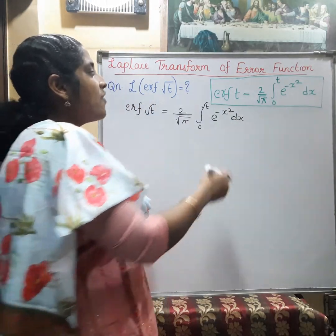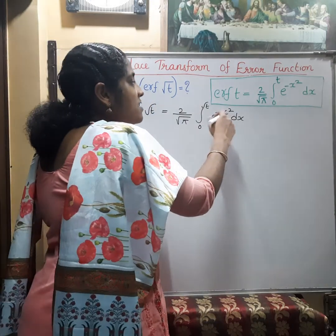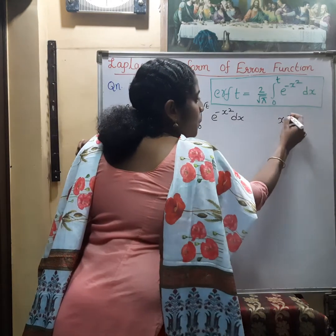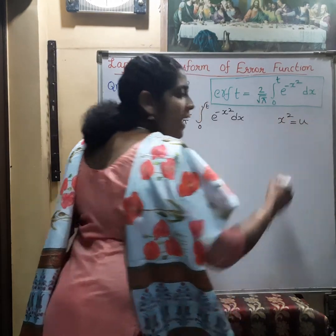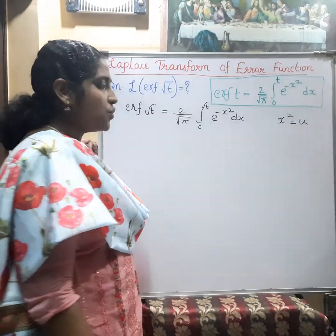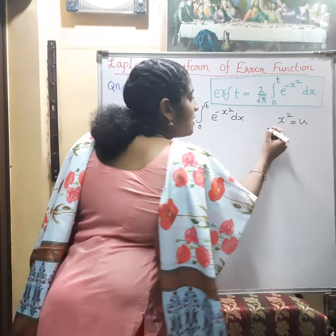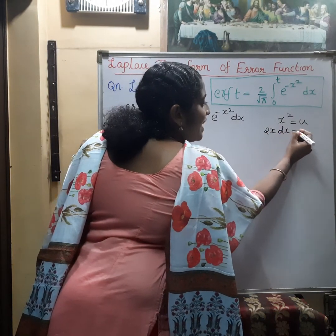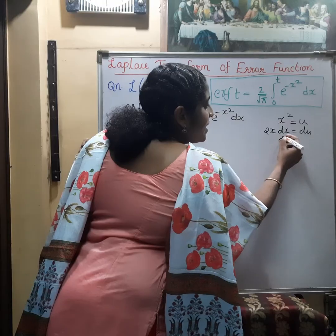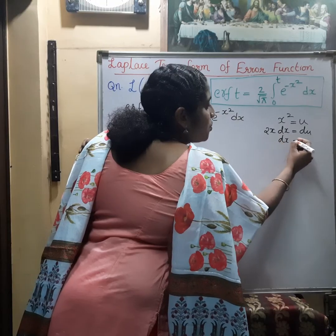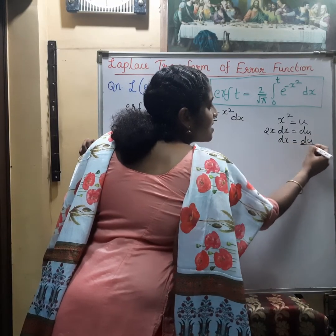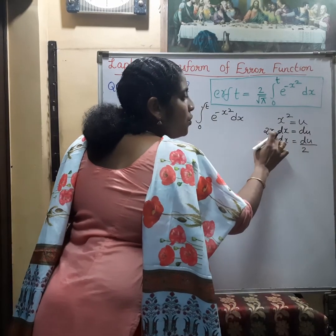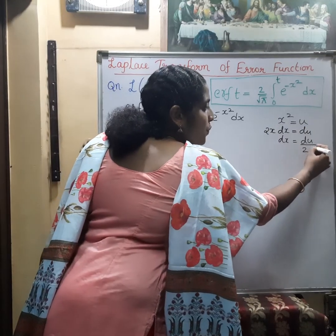In order to solve this, we can change x squared into u. So, x squared equals u. Then, on differentiating, 2x dx equals du, and dx equals du divided by 2x. Since x squared is u, x will be root u.